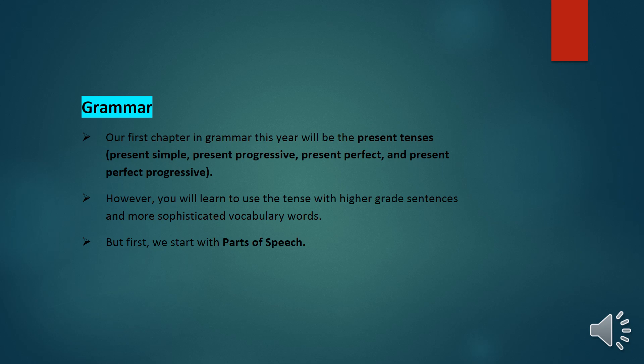Now we move to grammar — the parts of speech. A part of speech is a category to which a word is assigned according to its syntactic functions. In English, the main parts of speech are: noun, pronoun, adjective, determiner, verb, adverb, preposition, conjunction, and interjection.